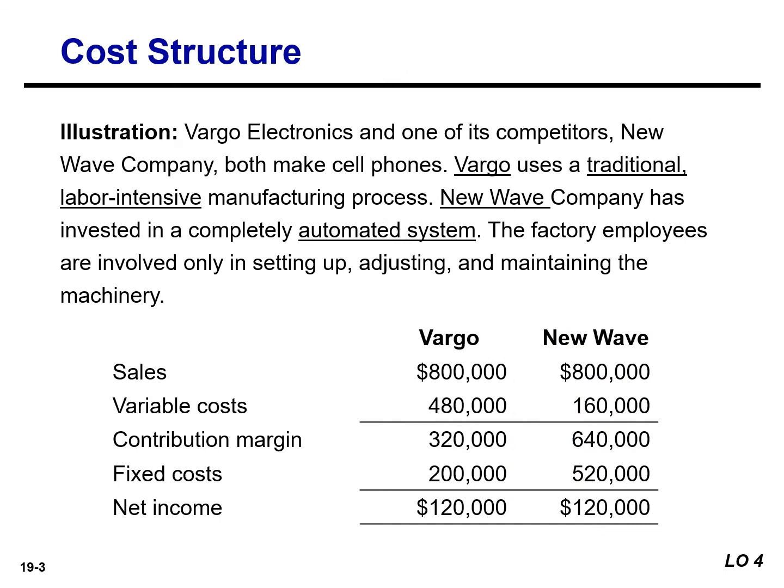Consider the following example of Vargo Video and one of its competitors, New Wave Company. Both make cell phones, but Vargo uses a traditional labor-intensive manufacturing process. On the other hand, New Wave has invested in a completely automated system. The factory employees are involved only in setting up, adjusting, and maintaining the machinery.